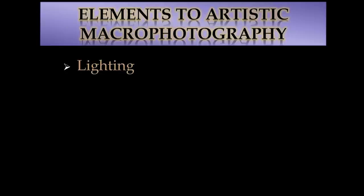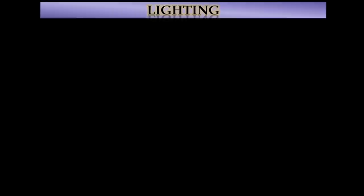We're going to wrap up this overall presentation with the elements to good artistic macro photography. They are essentially three: one, proper lighting; two, the best composition; three, excellent focus. We will discuss each of these in turn.